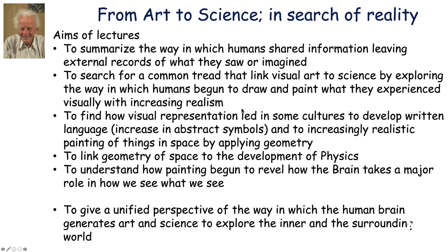To search for a common thread that links visual art to science by exploring the way in which humans began to draw and paint what they experienced visually with increasing realism. To find how visual representation led, in some cultures, to the development of written language, an increase in abstract symbols, and increasingly realistic paintings of things in space by applying geometry. Then to link the geometry of space to the development of modern physics. I don't pretend this unified perspective followed a very tight line in prehistory and history — it was probably a semi-random process of cumulative events, which I now put in a common perspective, just to simplify our understanding.